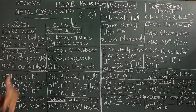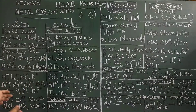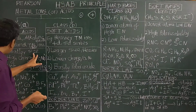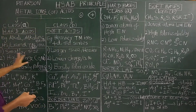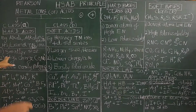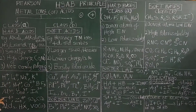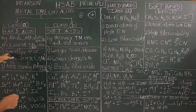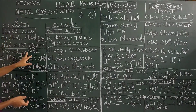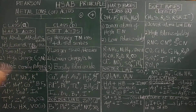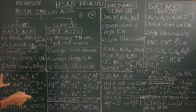The characteristic properties of hard acids are: they are cations of smaller size and high charge, with a high oxidation number. They are not easily polarizable. For example, lithium is rigid and not easily polarizable, whereas mercury is polarizable.